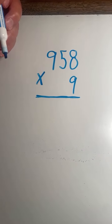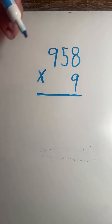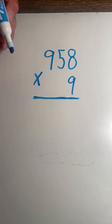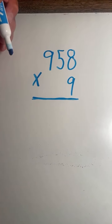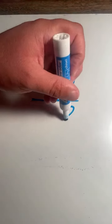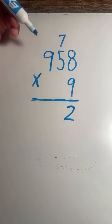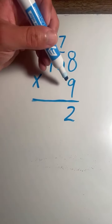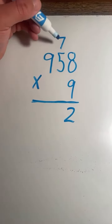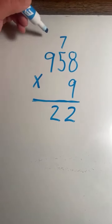958 times 9. We start in the ones place: 8 times 9 equals 72. Every time we have a product more than 10, we have to regroup. The 2 in 72 goes in the ones place, and the 7 gets carried over to the tens place. 5 times 9 equals 45, plus 7 equals 52. Again, carry the 5.